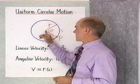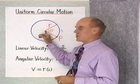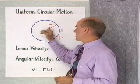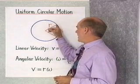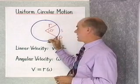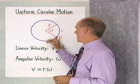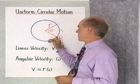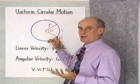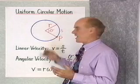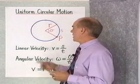θ is a central angle in this circle, the radius is r, and this arc length is s. That would be the amount of distance the point would travel on the circle in a time t.